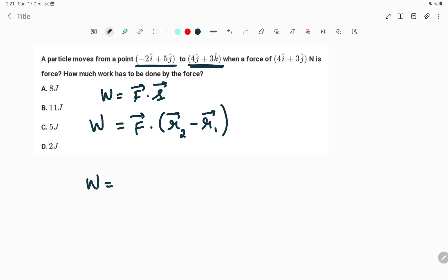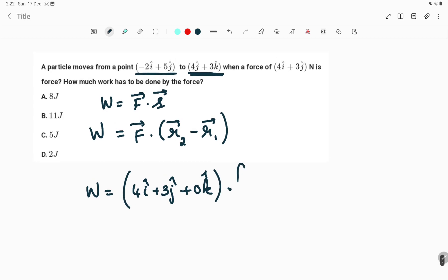The work done is the dot product with that force. So force is 4i + 3j + 0k, because there is no z-axis component.